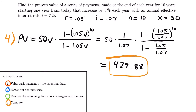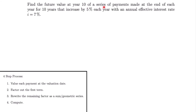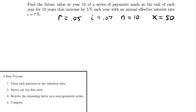Now let's look at finding the future value of a geometric annuity using the same four-step process, because it will look a little different but still works the same way. We'll find the future value at year 10 of the same series: payments at the end of each year for 10 years increasing by 5% per year with an annual effective interest rate of 7%, and x = $50.